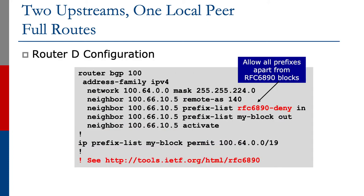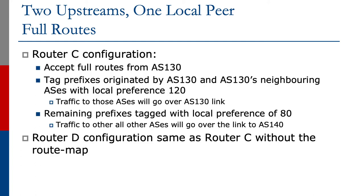Let's look at router D's configuration. Again, we're getting the full BGP table from AS140 upstream and filtering what's coming in to make sure that RFC 6890 prefixes and their friends are not permitted into the network — that's the special use prefix list. Outbound we send just our aggregate. Router D's configuration is the same as router C's but without the route map setting preferences, which means all prefixes coming in from router D will stay with the local preference default value of 100.